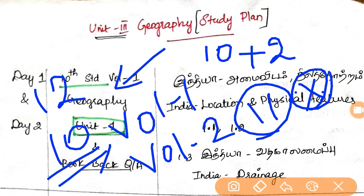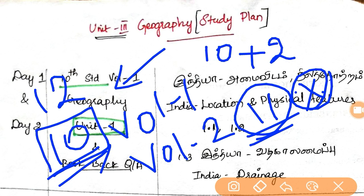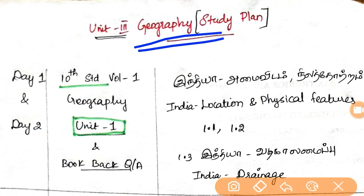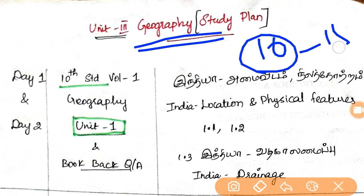If you cover everything completely, the 10th standard will be fully done. In the first chapter, we will have 6 chapters. This is the 12th chapter. If you have any questions in geography, you will have a minimum of 10 questions — we will expect 15 questions.